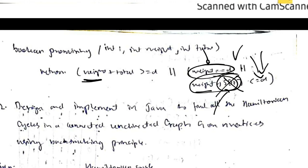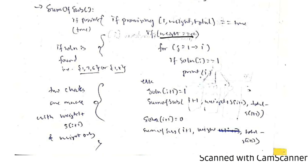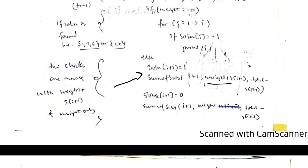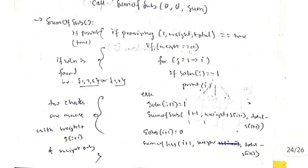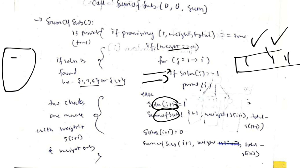If promising returns true, we check if weight equals d - if so, we print the current subset. Otherwise, we try two possibilities: include s[i+1] by calling sumOfSubset with weight + s[i+1], or exclude it and skip to the next element. By recursively trying all combinations, we find and print all valid subsets whose sum equals d.